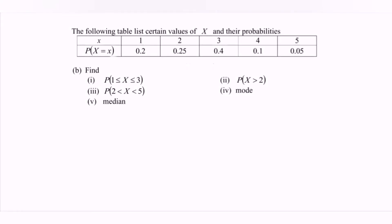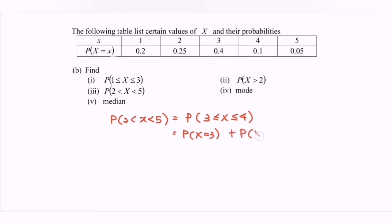For question 3, we find the probability that X is strictly between 2 and 5. We modify the situation since it is a discrete random variable. The strict inequality means it becomes the probability that X is greater than or equal to 3 and less than or equal to 4, so P(X=3) plus P(X=4). Substituting, we have 0.4 plus 0.1. So the probability that X is between 2 and 5 is equal to 0.5.